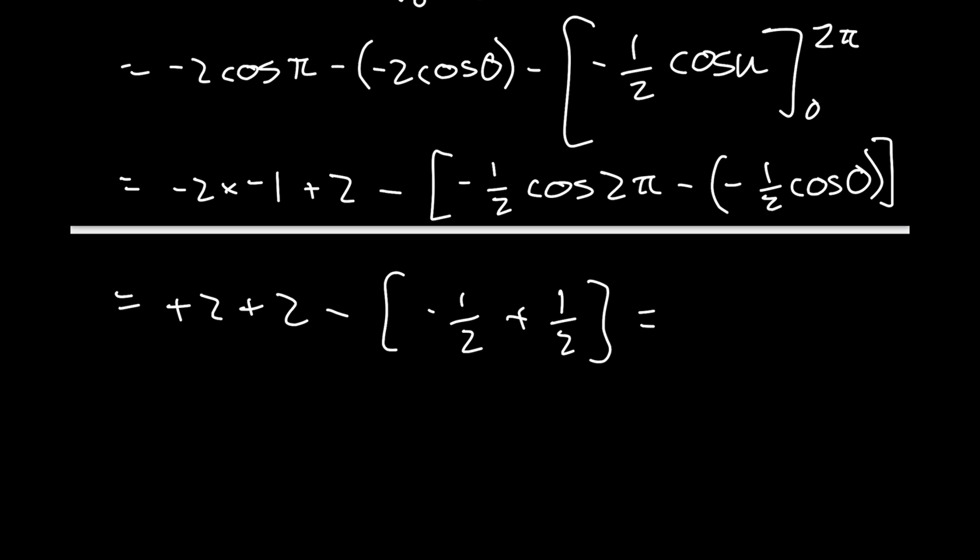We have 2 + 2 = 4, minus 0. So we get 4 units squared, since this is area.